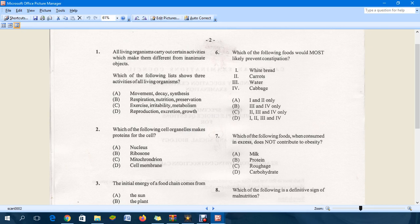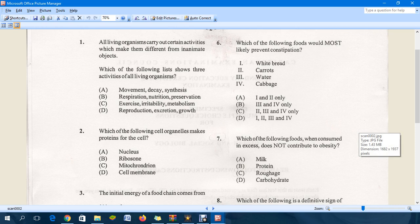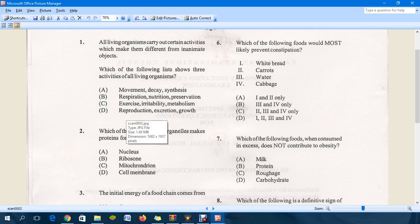Question one: All living organisms carry out certain activities which make them different from inanimate objects. Which of the following list shows three activities of all living organisms? The answer is D, which is reproduction, excretion, and growth. As you can see, C said exercise - not all living organisms need to exercise. B, preservation - not all living organisms will do that. And synthesis - not all living organisms do that.